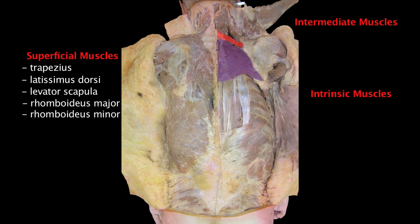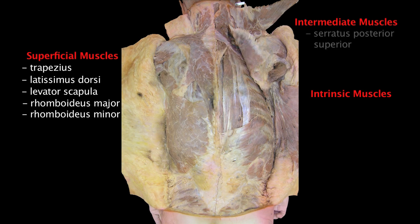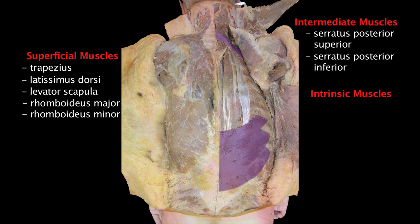These muscles connect the upper limbs to the trunk of the body and produce and control their movements. The serratus posterior superior and inferior make up the intermediate layer. They assist in the movement of the ribs during inspiration.